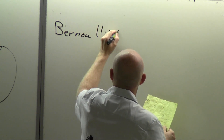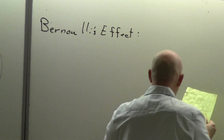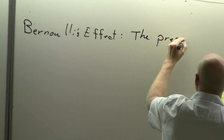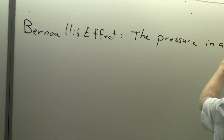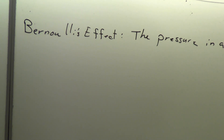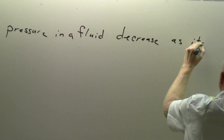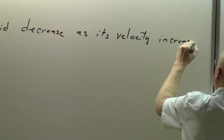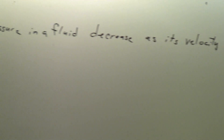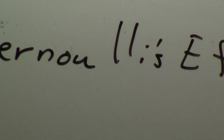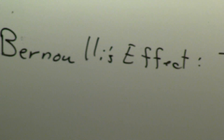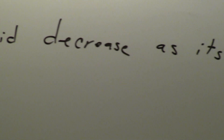Bernoulli says conceptually that the pressure in a fluid will decrease as its velocity increases. Archimedes started off conceptually and then we got to some math — we're not even going to go that far here. We'll wait for Physics 121 for that; it's chapter 14. But let's at least talk about it conceptually.